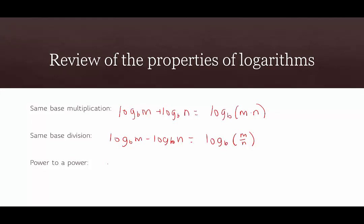Lastly, if we have power to a power — log base b of m to the r — we can rewrite this as r times log base b of m. So the exponent becomes the coefficient and is multiplied out in front.